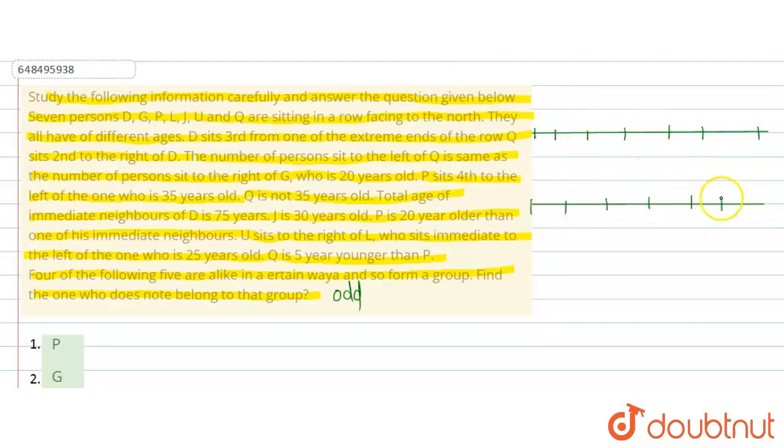Now given is that D is in third place. So D is in third place. Then given is Q sits second to right of D. So D is here, second right of Q is here in this case.